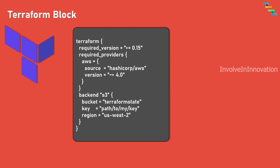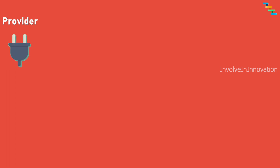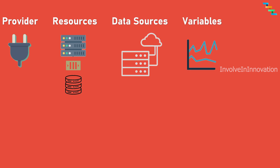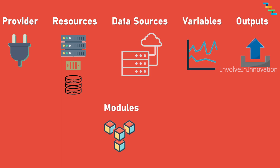Now we will see about the different blocks which constitute Terraform. This is key to understand Terraform. There are several types of objects or blocks that you can define within your infrastructure code. These objects represent various resources, configurations, and elements that you can manage using Terraform. The important Terraform objects are: providers, resources, data sources, variables, outputs, modules, and locals.